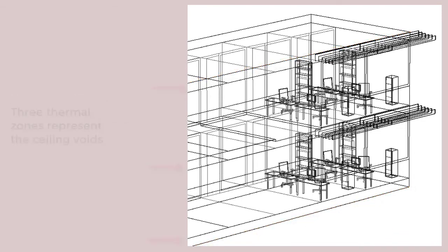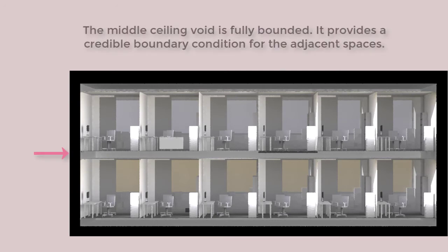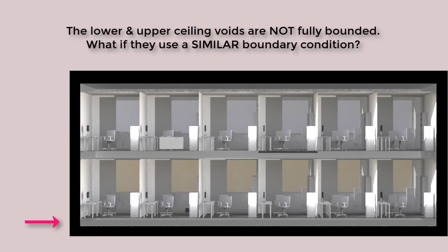Representing ceiling voids as thermal zones is, for many practitioners, a no-brainer. In the model, the middle ceiling void between the two levels of offices is fully bounded. However, the lower ceiling void in this model does not have a fully defined set of offices below it.